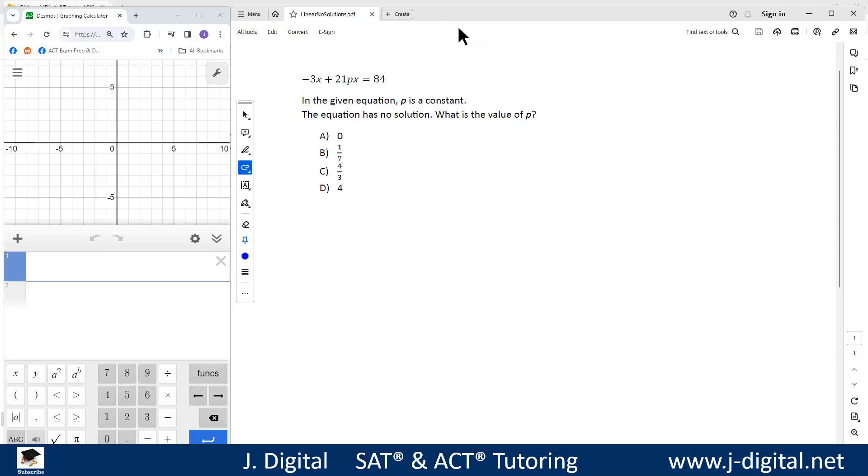All right, so here is an SAT problem I'm going to take a look at. This has negative 3x plus 21px equals 84, and the given equation p is a constant. The equation has no solution, what is the value of p?